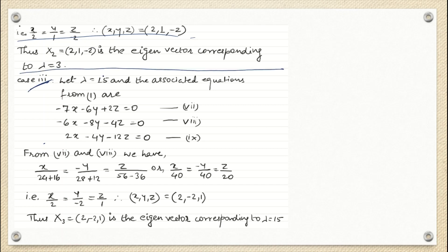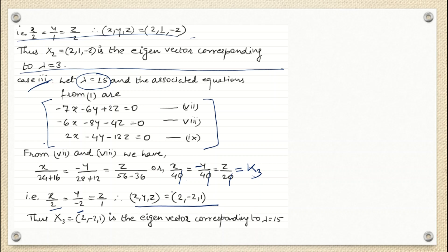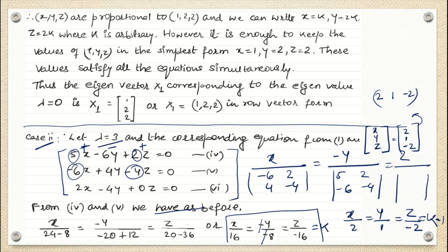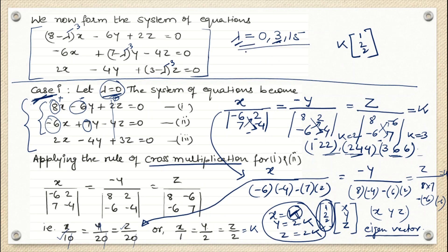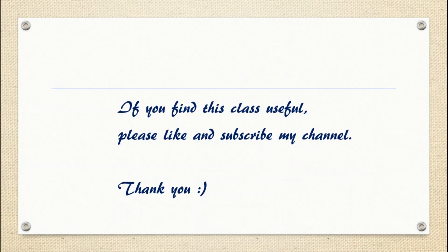Case 3: λ = 15. Substitute λ = 15, obtain three new equations, and solve by cross multiplication. Setting K = 1, we get X/2 = Y/(-2) = Z/1, giving the eigenvector (2, -2, 1) corresponding to λ = 15. This is how we calculate eigenvalues and eigenvectors of a given matrix. If you have 3 eigenvalues, you must show all 3 cases. If you find this class useful, please like and subscribe.